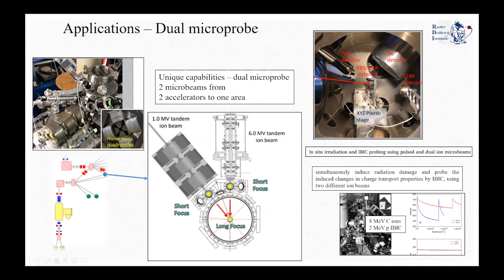We have already developed one microbeam and are currently under development of the microbeam from the Van de Graaff accelerator. We have done studies with a collimated beam from the big accelerator and the microbeam from the small accelerator for in-situ irradiations and IBIC probing using dual ion microbeams. To demonstrate the feasibility of these studies, we used a silicon diode where we first collimated a beam of 8 MeV carbon ions from the Van de Graaff accelerator — aiming to induce radiation damage — and then from the small accelerator we studied the charge transport properties after the radiation damage using the IBIC technique.